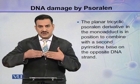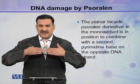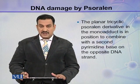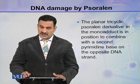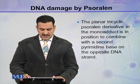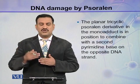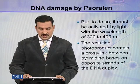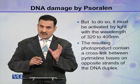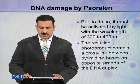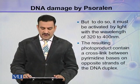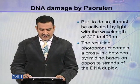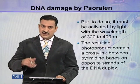The planar tricyclic psoralen derivative in the monoadduct has been attached to one pyrimidine in the DNA. This planar molecule is now in position to combine with another pyrimidine base either on the same strand or on the opposite strand — most probably it will link with the opposite strand. To do so, it must be activated again, because only the furan group has been activated so far. It must be activated by light with a wavelength of 320 to 400 nanometers. If the DNA containing this monoadduct is exposed to light of 320 to 400 nanometers, the second reactive group of psoralen is also activated.